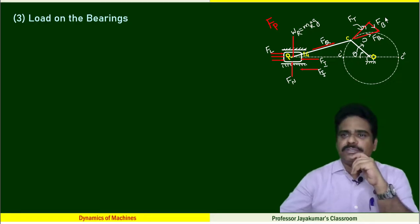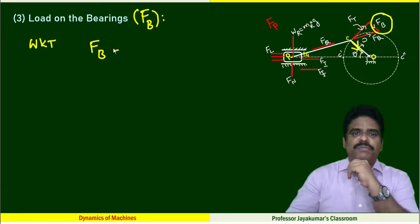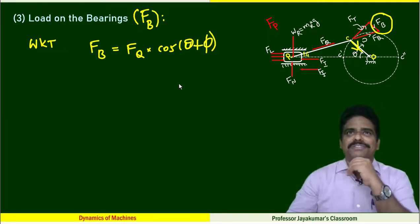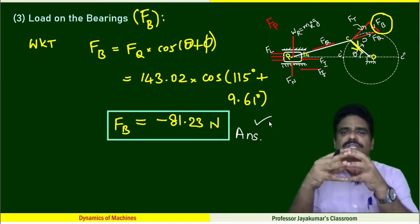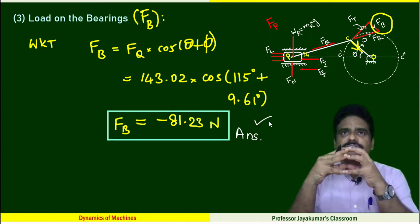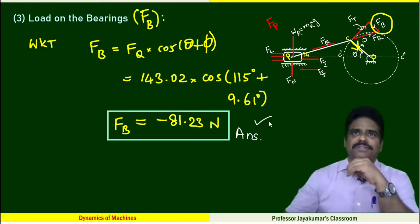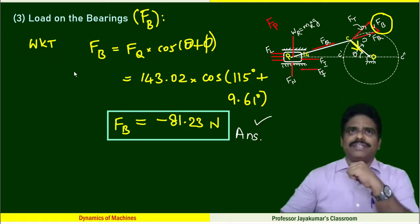What is my load on the bearing? This is the load on the bearing. We know that FB equals FQ cos(θ + φ). How to get this equation? Please refer to the previous derivation video. On simplification, we will get the FB value like this, minus 81.23.